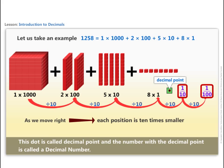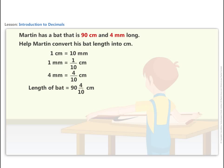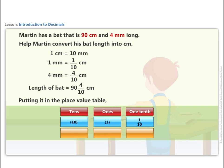Let us now try to represent the length of Martin's bat using decimal notation. Substituting the values in the place table and using the concept of decimal, we get length of the bat as 90.4 centimeters.